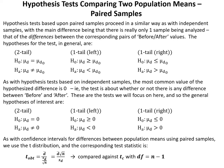Hypothesis tests based upon paired samples proceed similarly to those for independent samples, with the main difference being that there is really only one sample being analyzed — that of the differences between the corresponding pairs of before and after values. The hypotheses for the paired test are the same as for independent samples, except we replace mu1 minus mu2 with muD. As with independent samples, the most common hypothesized difference is zero — testing whether there is any difference between before and after.